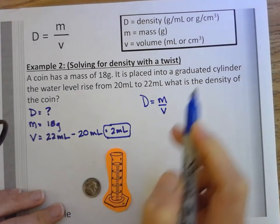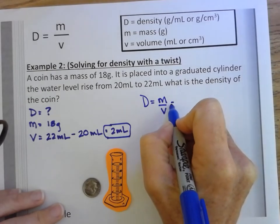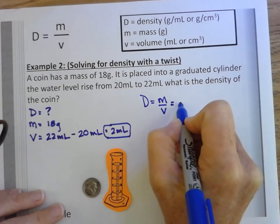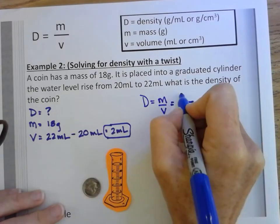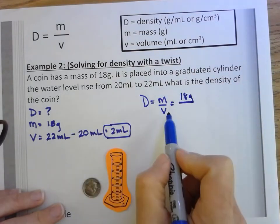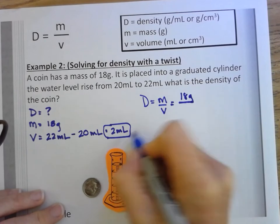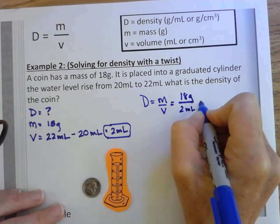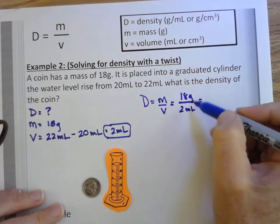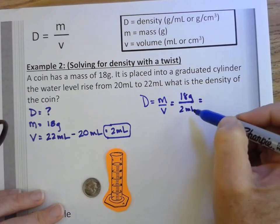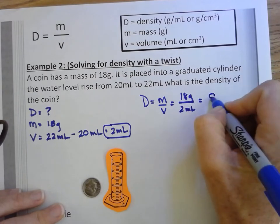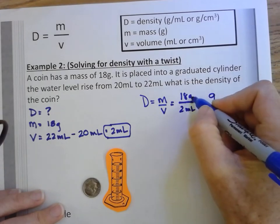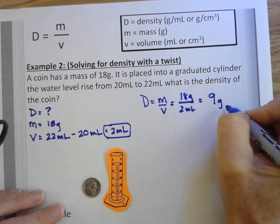Therefore, I don't need to rearrange this. I'm going to just write an equal sign. Then in place of the M, I'm going to go find the number for that: 18 grams. And in place of the V, I'm going to use the 2 milliliters, because that is the volume of the coin. This is a division, and I have 2 into 18 or 18 divided by 2. That is 9. And then the units are grams per milliliter.